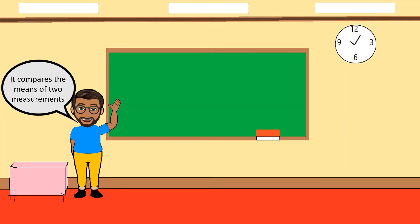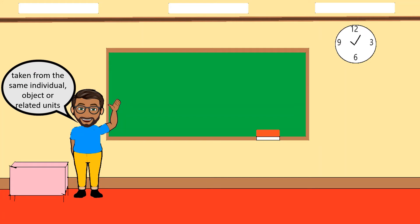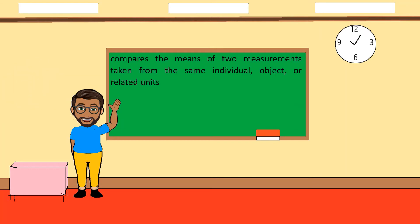The paired sample case compares the means of two measurements taken from the same individual, object, or related units — such as pre-test and post-test scores. The formula is: T equals the summation of the differences d, all over the square root of the quantity n times the summation of d² minus the summation of d squared, all over n minus 1. The degrees of freedom is n minus 1.